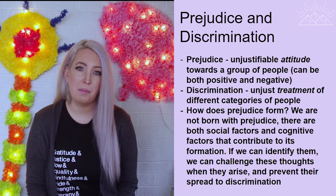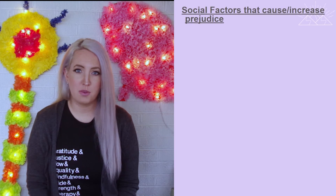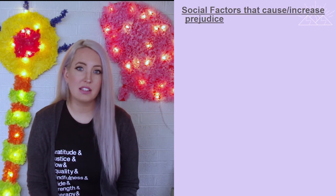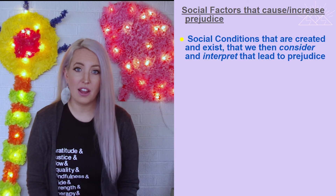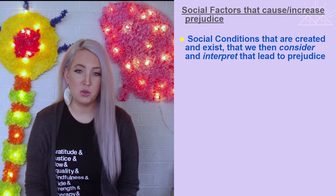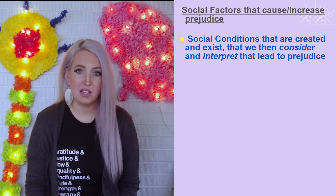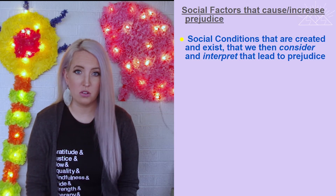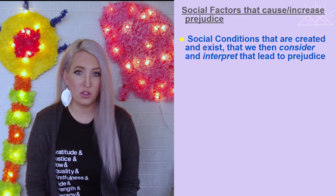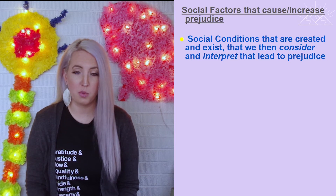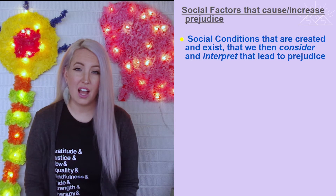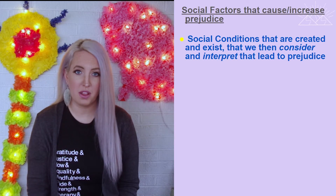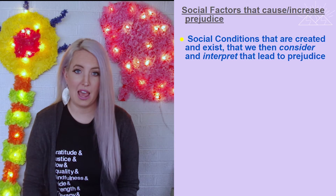Social factors that contribute to prejudice are typically things that are pre-existing in our society. They are the environmental influences that we then have to view, interpret, and make a decision about. It's usually the first step that then leads to the cognitive factors that will ultimately create the prejudice that each one of us has.